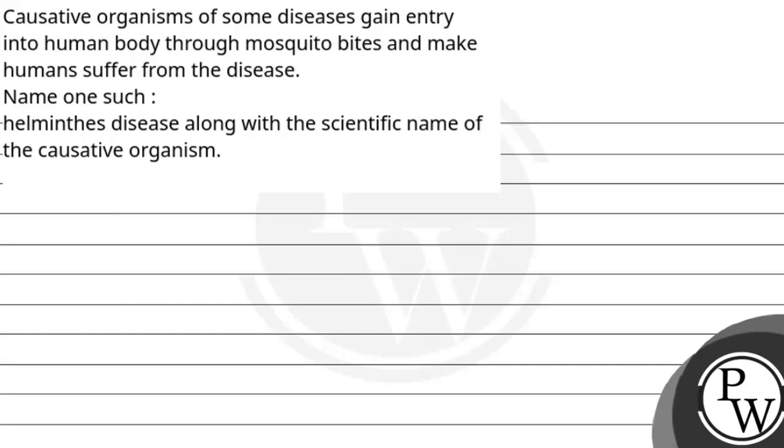Hello, let us read the question. The question says causative organisms of some diseases gain entry into human body through mosquito bites and make humans suffer from the disease. Name one such helminth disease along with the scientific name of the causative organism.